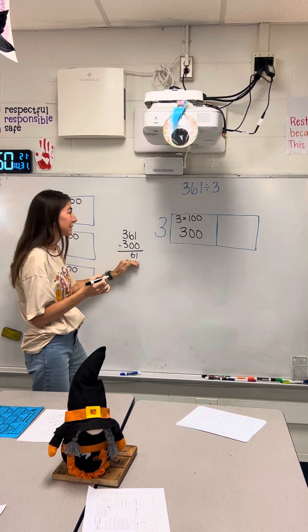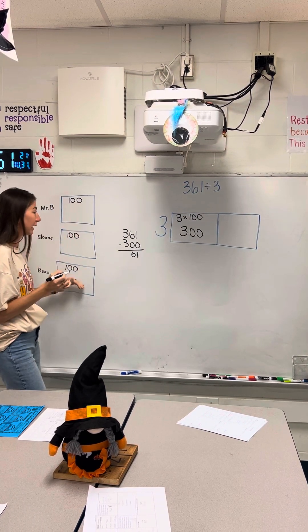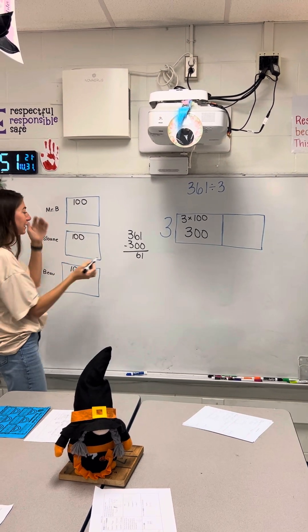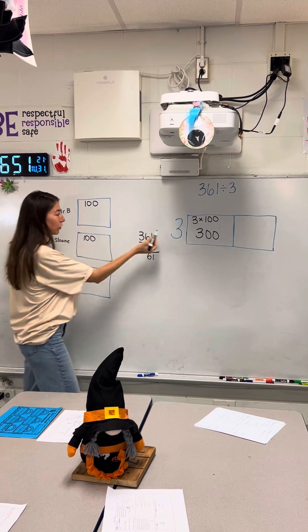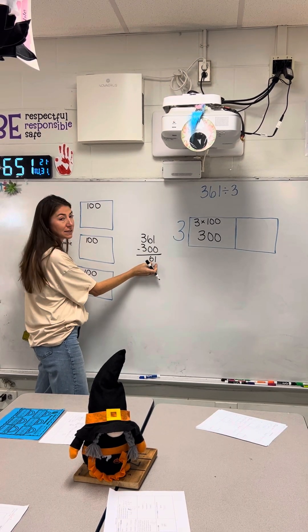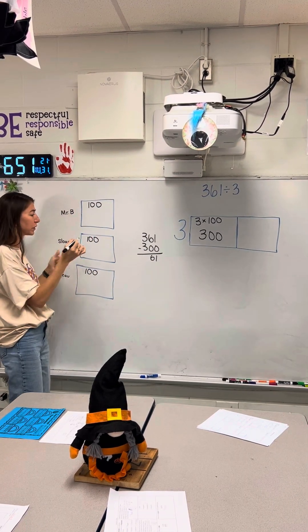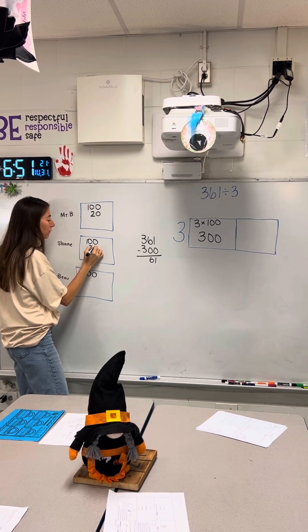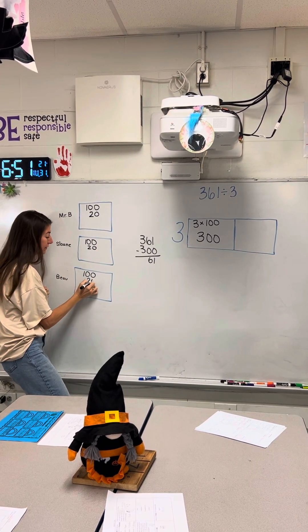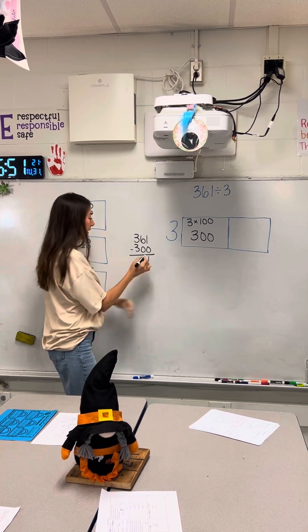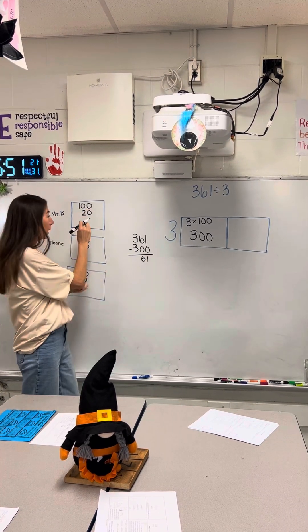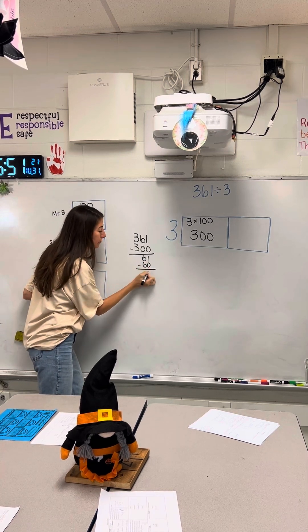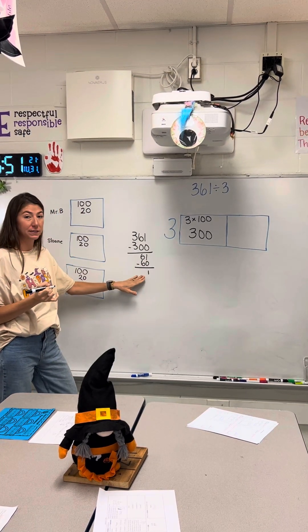Now I have 61 left and I want to divide it amongst this family. I know I can take three and put it into 61 — I can do that 20 times: 20, 40, 60. I broke up that piece of candy 60 more times, and that leaves me with one piece of candy.